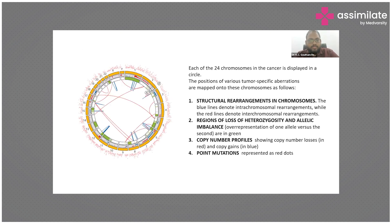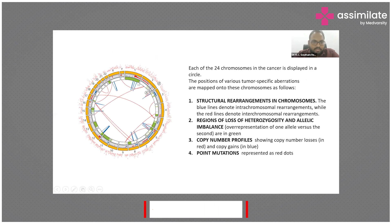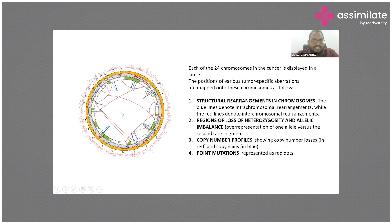Genetic information is represented using something called a Circos plot — this is a very important MCQ question that all postgraduate students should know. The numbers one, two, three, four and so on represent chromosomes. Blue lines denote intra-chromosomal rearrangements, where a gene moves from one part of the same chromosome to another part. Red lines represent inter-chromosomal translocations — a genetic material exchange between two different chromosomes, such as between chromosome 18 and chromosome 5.